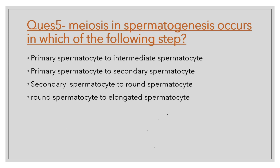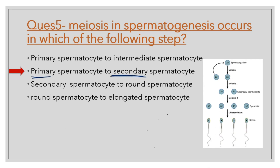Question number 5: Meiosis in spermatogenesis occurs at which step — primary spermatocyte to intermediate, primary spermatocyte to secondary, secondary spermatocyte to round, or round spermatocyte to elongated? The correct option is primary spermatocyte to secondary spermatocyte. As seen in the diagram, spermatogonium is converted to primary spermatocyte through mitosis, whereas primary spermatocyte is converted to secondary spermatocyte in meiosis I.